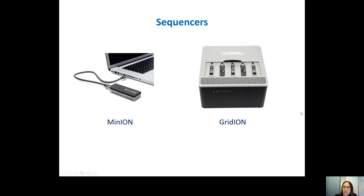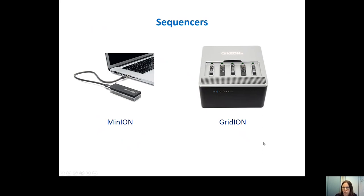We also use the GridION, which is a lot bigger. It can contain five different flow cells which you use for sequencing and you can run those five flow cells simultaneously. This machine also contains the computer and the storage, and it's updated more regularly, which is also very convenient. I like to use the GridION because we have it available right now.